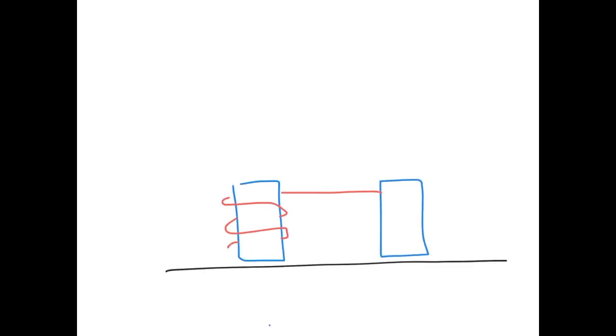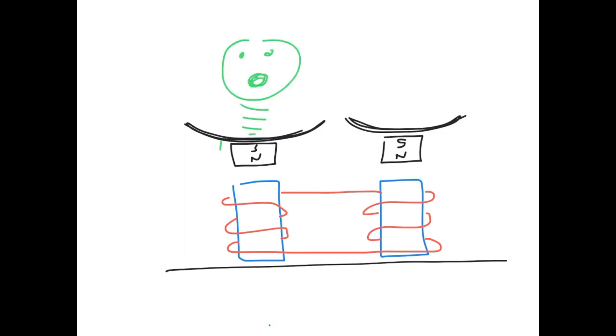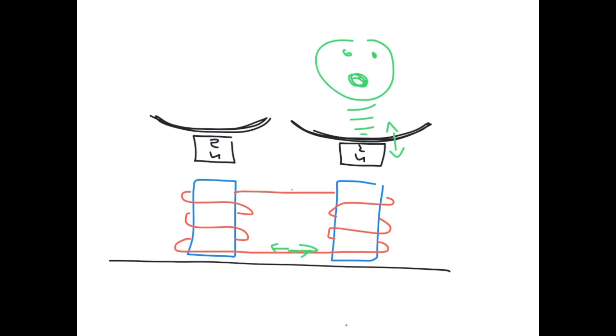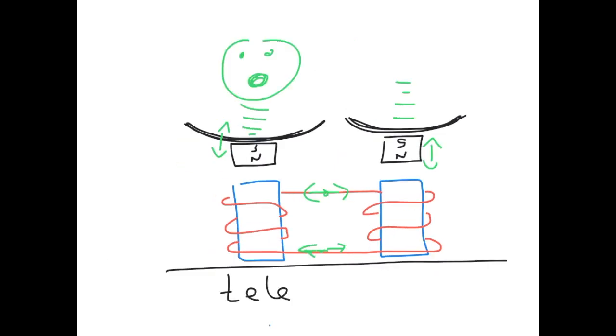Suppose I replace the bouncing magnets with speakers. If I talk into this side, my voice will come out of this side. If I talk into this side, my voice will come out this side. I've made a telephone.